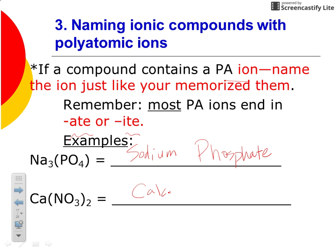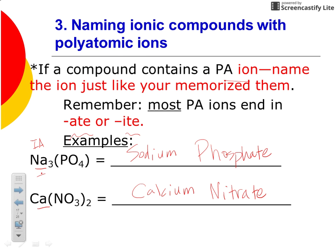Here's calcium, and then this is nitrate. Why do I not need a Roman numeral on these particular names? Look back at your metal — these are monovalent. Sodium is in group 1A, so he's always going to be a plus one; there's no reason to give a Roman numeral. Calcium is in group 2A, he's always going to be a plus two, so there's no reason to give a Roman numeral if it's monovalent.